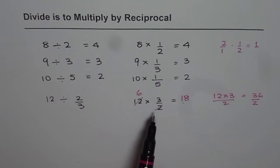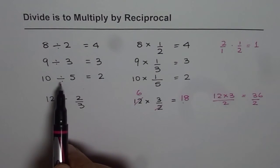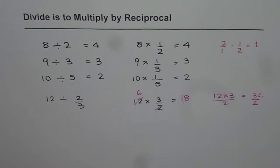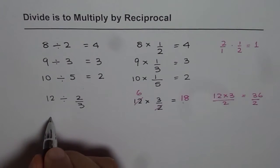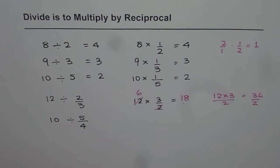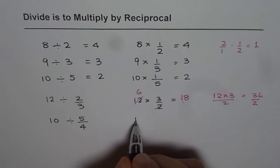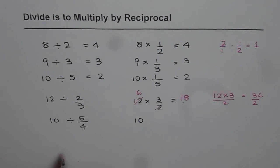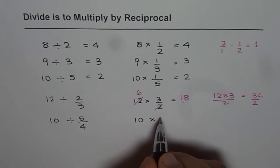And therefore, we always treat division as multiplication by reciprocal. So here are a few examples which you can try. That is 10 divided by 5 over 4. What should this be equal to? When we say 10 divided by 5 over 4, we should first write it as multiplication statement. That is 10 times 4 over 5.